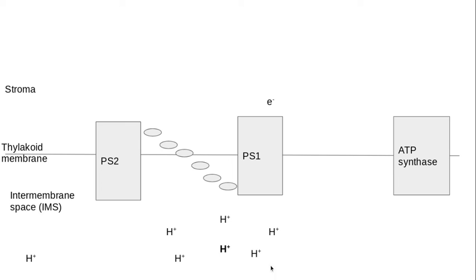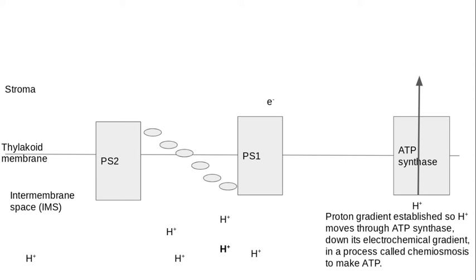What I've got now is a buildup of hydrogen ions in the intermembrane space, and this is also known as a proton gradient. This proton gradient that has been established means that the hydrogen ions can flow through this ATP synthase, which is an enzyme, in a process called chemiosmosis. Chemiosmosis is the process where ATP is made using ATP synthase within a membrane like this thylakoid membrane.